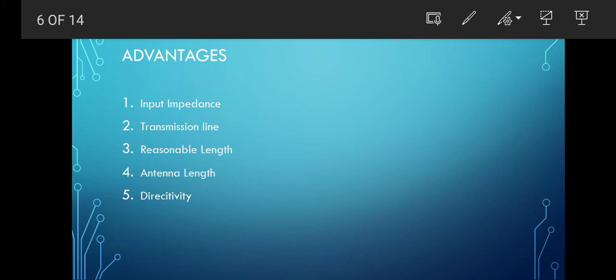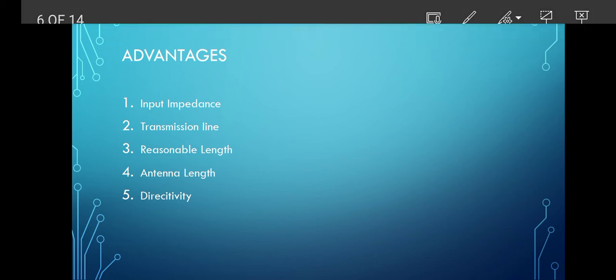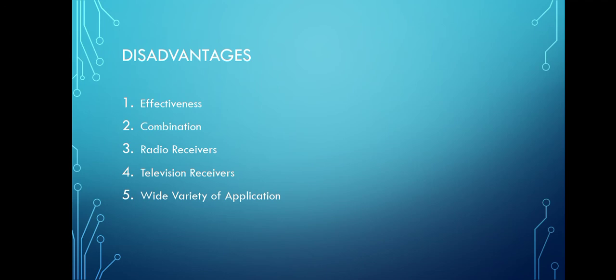Disadvantages of the half-wave dipole antenna: it is not very effective as a single element and works better only in combinations. Applications: it is used in radio receivers and television receivers, and when employed with other elements, it is used for a wide variety of applications.